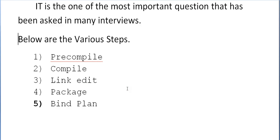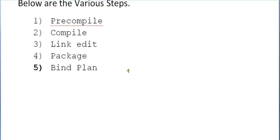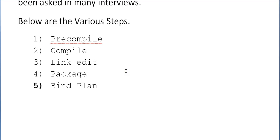In order to compile a COBOL DB2 program, there are basically five steps we need to determine. The first is pre-compilation, next is compile, then third is link edit, then package, and finally bind plan.